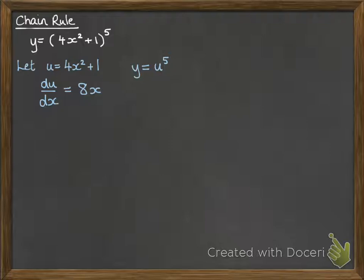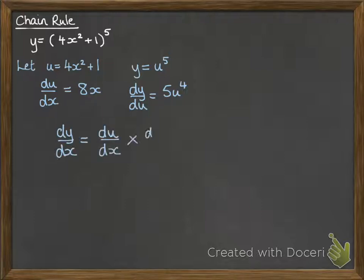And if we differentiate y with respect to u this time instead of x, then we will get 5u to the 4. So we're differentiating the u in that case. Now, we want to be able to work out dy by dx. We can find that by multiplying those two things together, because du by dx times dy by du would cancel out the u's and give us dy by dx.